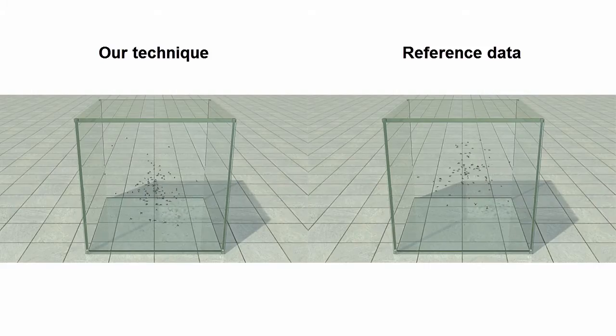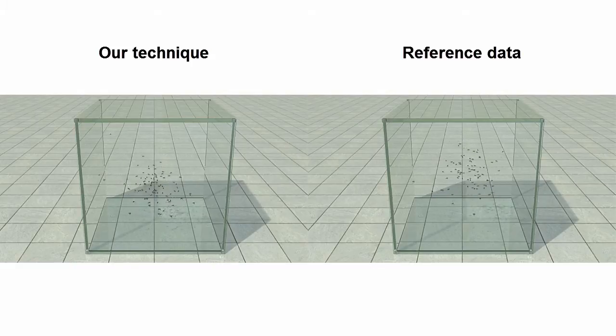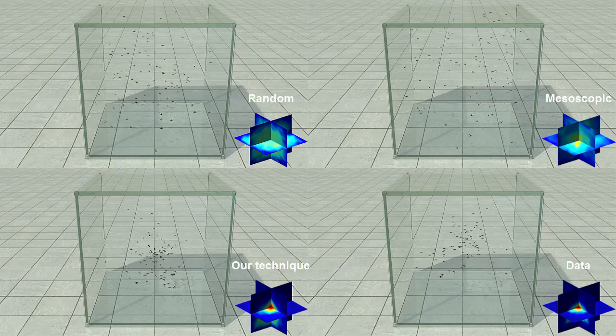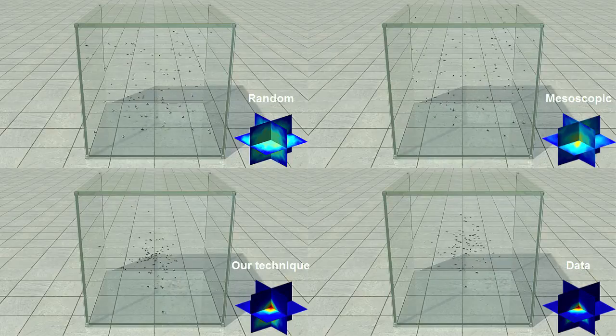With the addition of the density fields extracted from the reference data, we can also constrain the shape of the swarm on the left to reproduce the real swarm on the right. We can now check if this density is well reproduced.